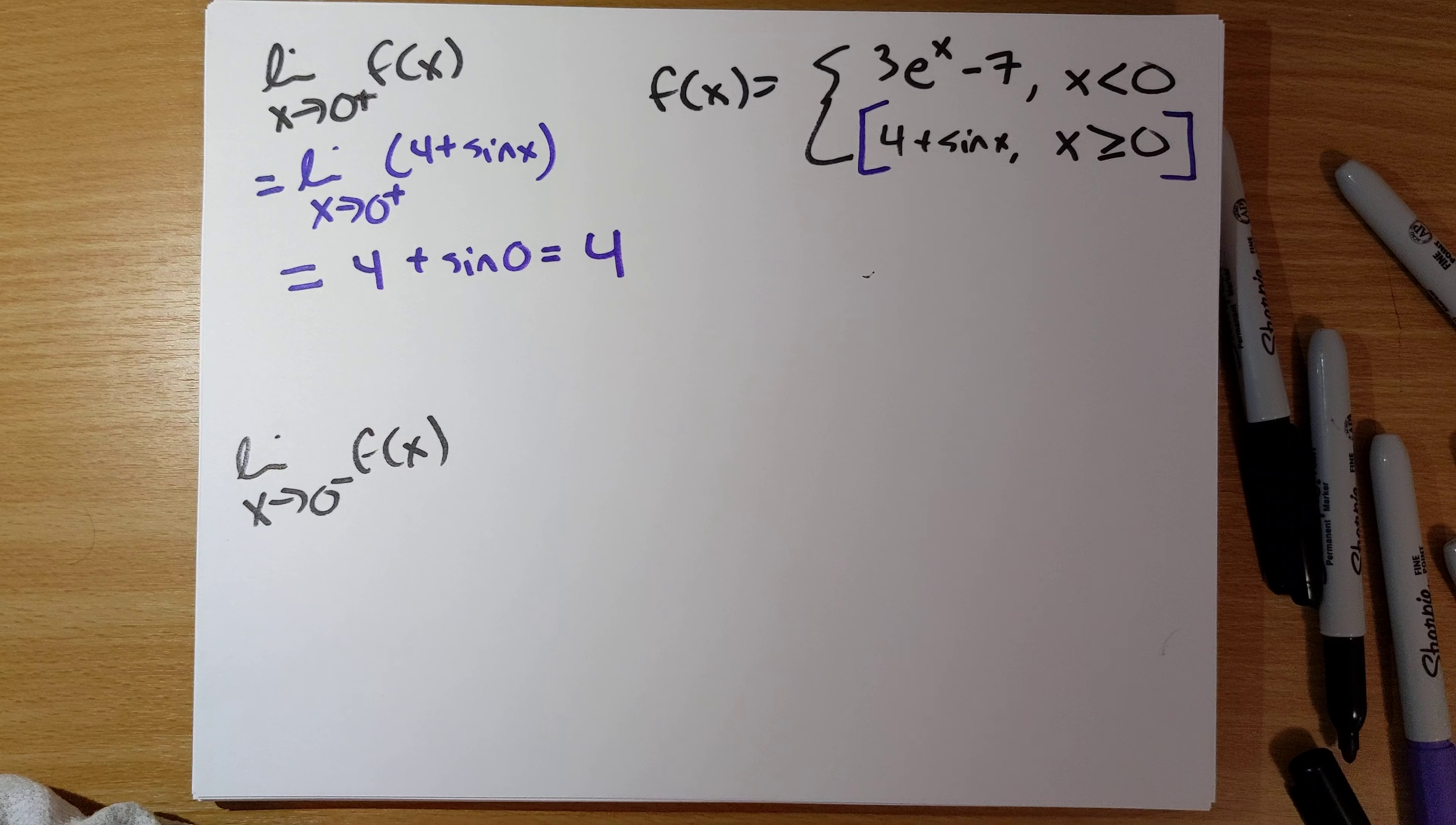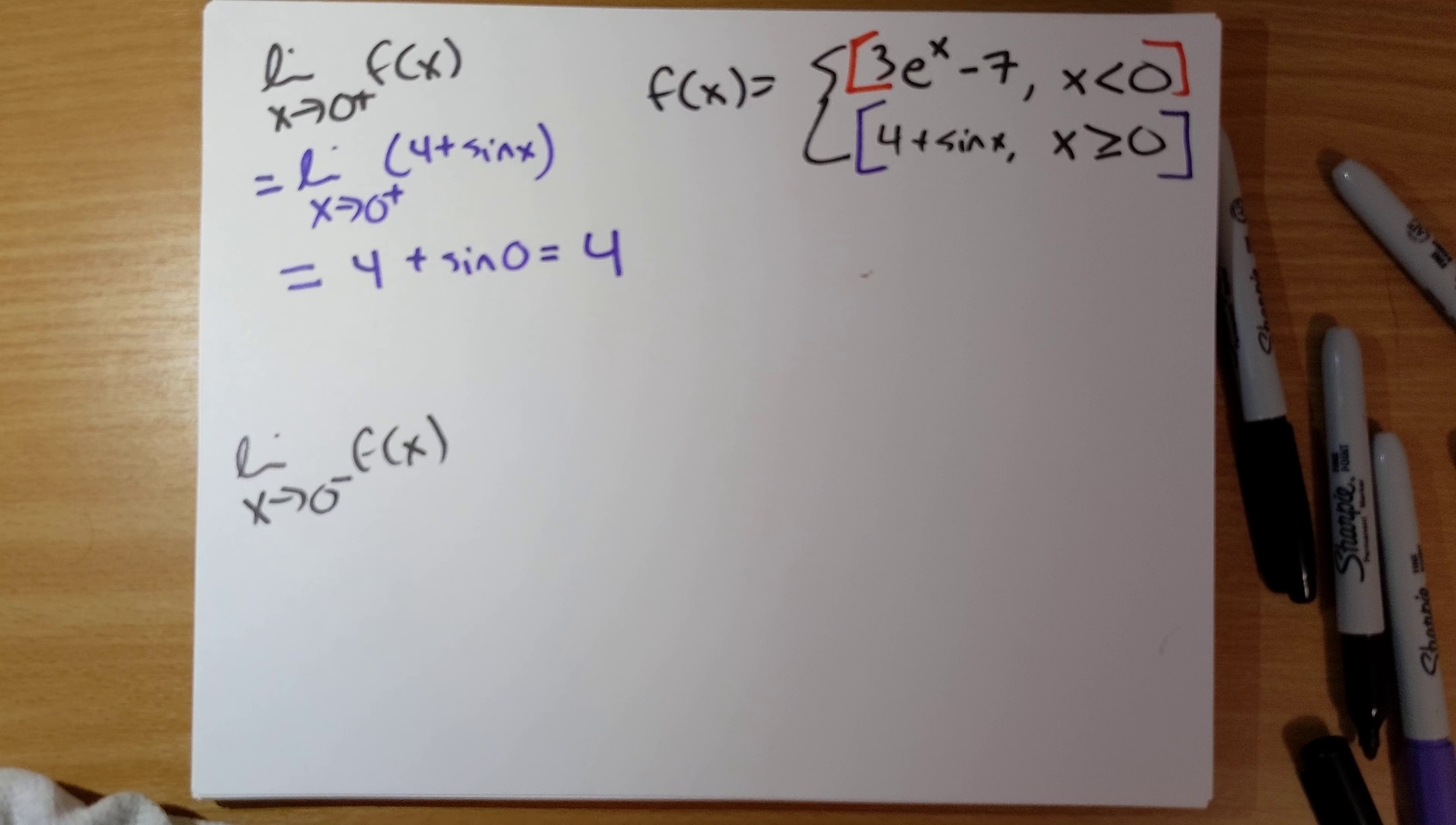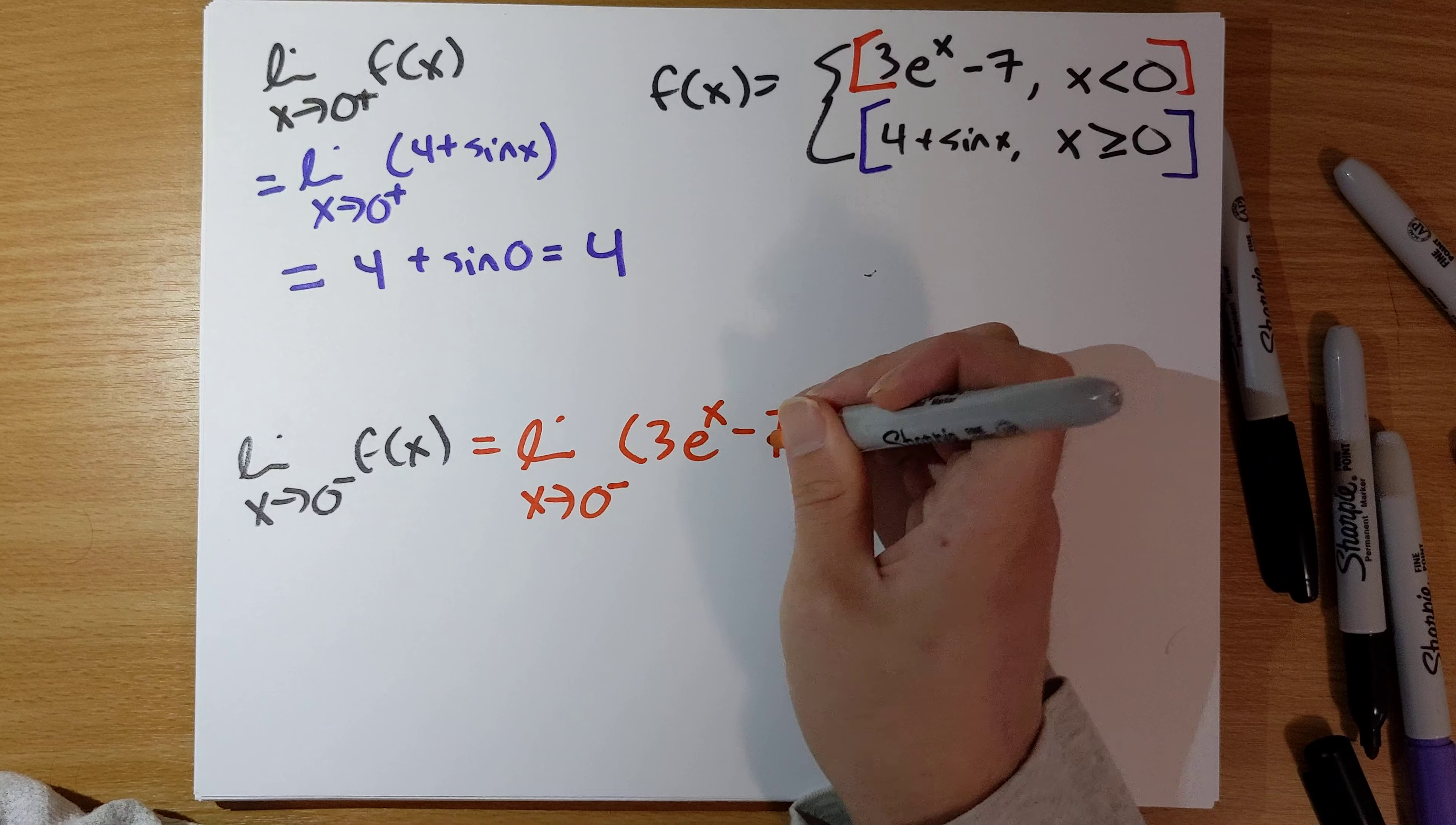Now for the other one-sided limit, the limit as x goes to 0 from the left of f of x. This is this case here, x is negative, so we're going to replace f of x with 3e to the x minus 7. So the limit as x goes to 0 from the left of 3e to the x minus 7.